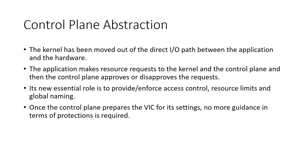Rather than setting up forwarding tables like in network switches, the control plane approves and disapproves requests. When the application needs some storage space or a network socket, it goes to the control plane in the kernel, which can then approve or disapprove those requests. This lets us have our cake and eat it too — it provides and enforces access control, as well as resource limiting, which is a protection that allows the kernel to maintain stability so that no application can hog up the whole system.